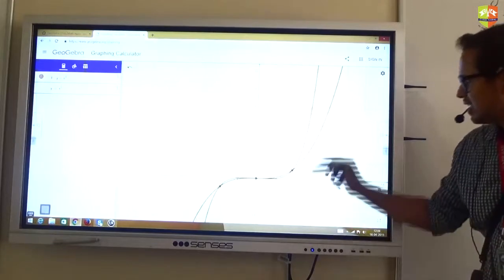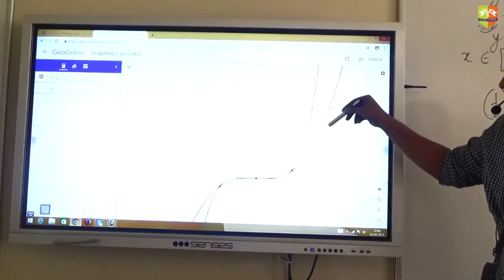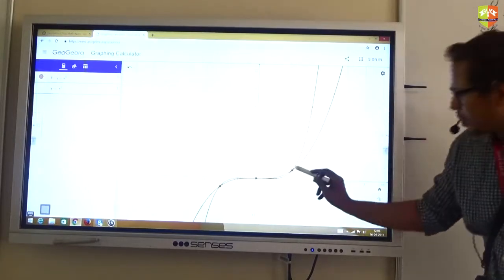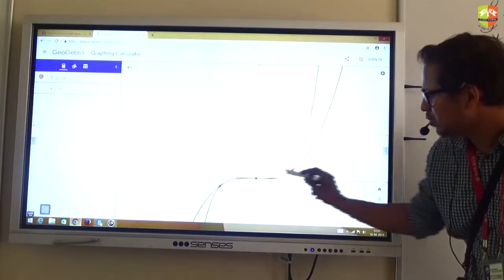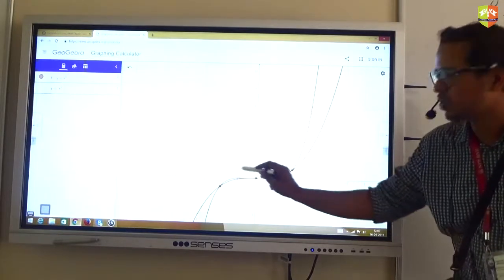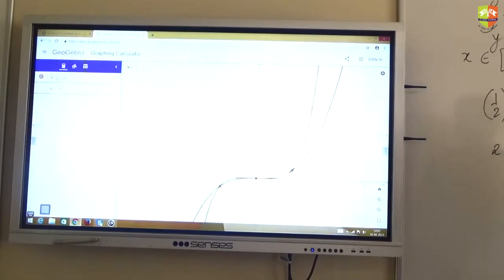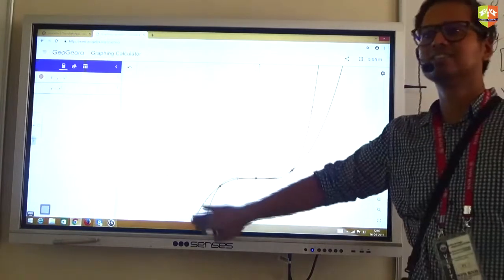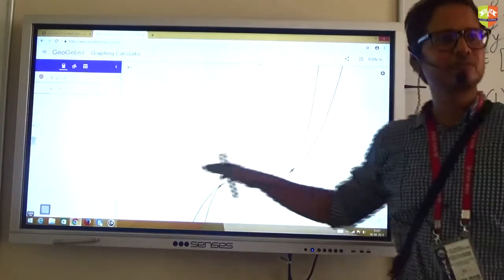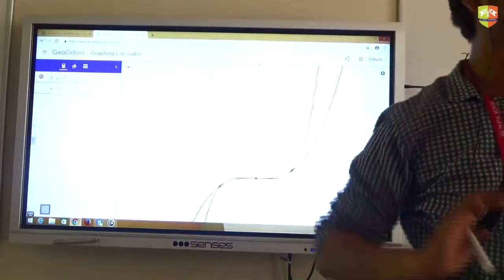Okay. So after 1, x to the power of 5 dominates x to the power of 3. But in the interval minus 1 to 1, x to the power of 5 graph is more flatter. That means it is having a lesser value in magnitude than x cube graph. What will happen if I put x to the power of 7? Even more flatter. X to the power of 9? Even more flatter. So x to the power of any odd power.